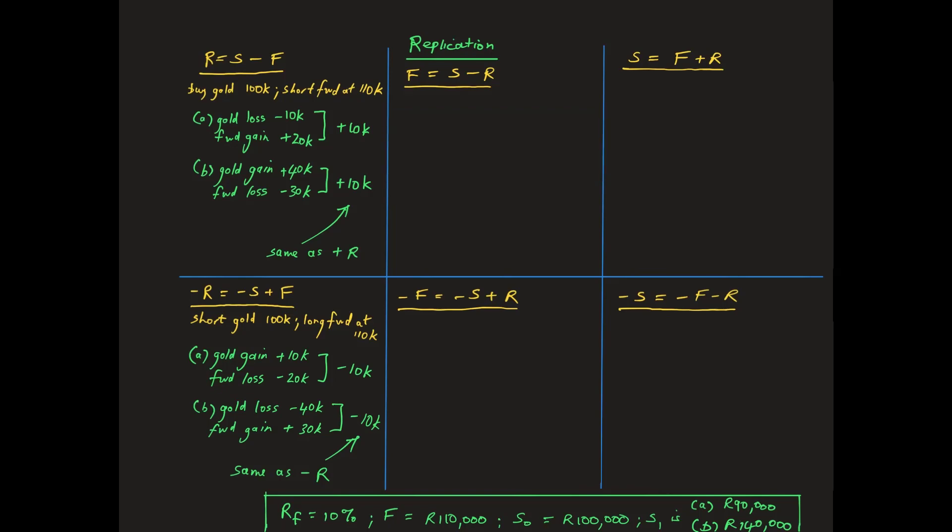In case A, the gold spot position loses because the price has decreased from R100,000 to R90,000. In addition, the short or borrowing position in the risk-free asset generates a cash outflow of R10,000. In combination, the total loss is R20,000. This is exactly the same as a long forward contract priced at R110,000 with an expiration date spot price of R90,000.